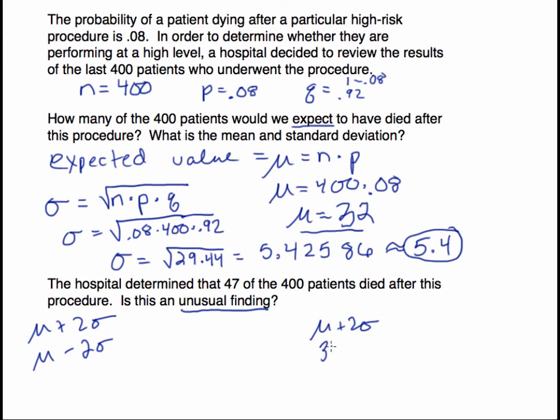If we take the mean and add two standard deviations, this would be 32 plus 2 times 5.4. So 32 plus 2 times 5.4, you get 42.8. That's the upper bound.